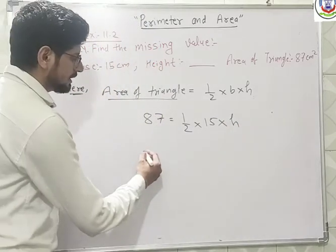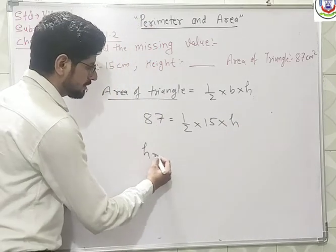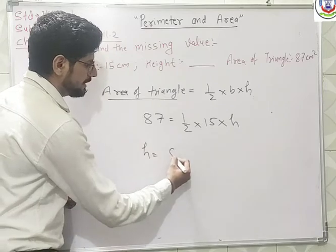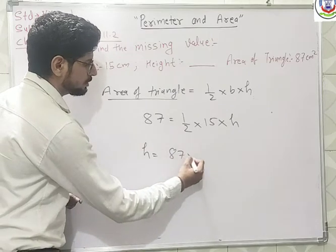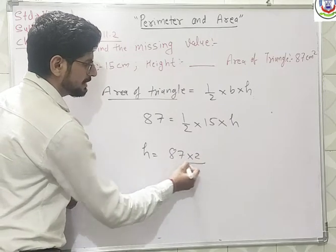So if you cross multiply, 87 is the numerator and 1/2 and 15 are on the other side.